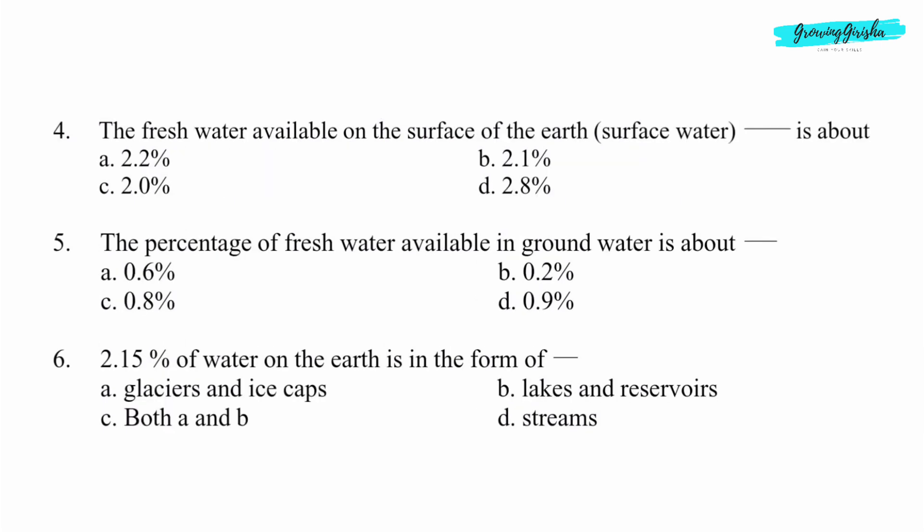Question 4. The fresh water available on the surface of the earth (surface water) dash is about. Option A: 2.2%.